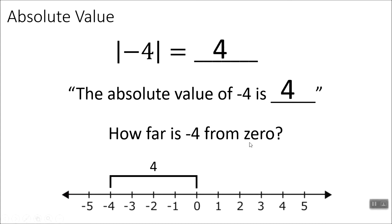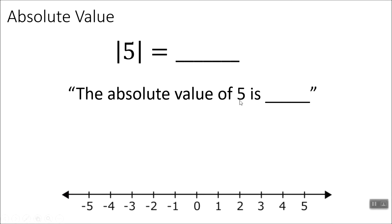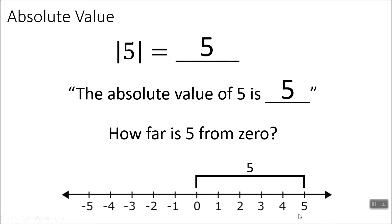Now that confuses kids because they see a negative sign, so they think it should be negative. But how far away is negative 4 from 0? It's going to be 4. This next one would be the absolute value of 5 is something. So how far is 5 from 0? Going down on the number line: 1, 2, 3, 4, 5 — it is 5 away. So the absolute value of 5 is 5.